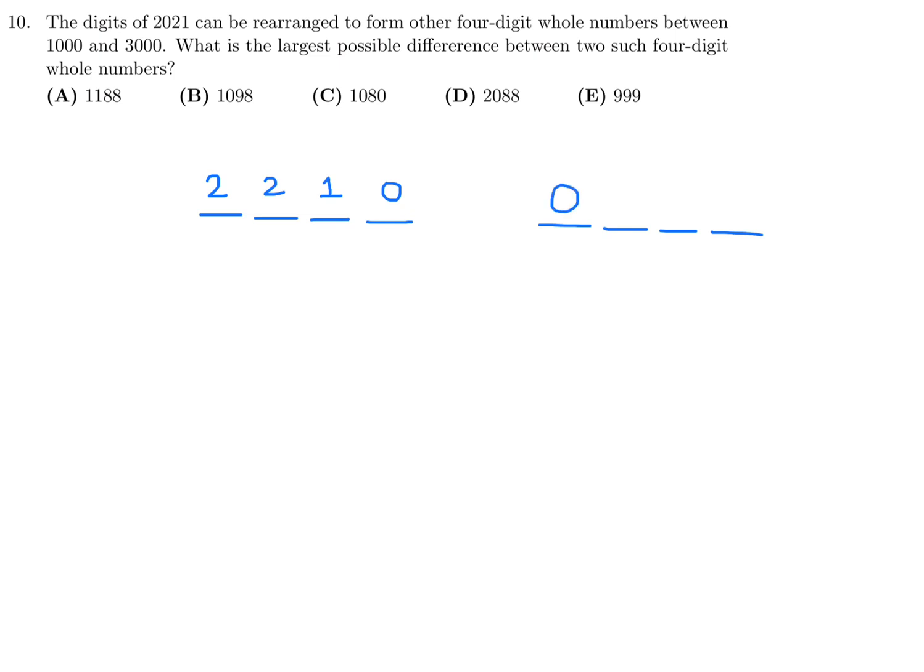For the smallest, the temptation is to put a 0 there. But then if you did, that wouldn't be a four-digit number. So the only number I can put here is either a 2 or a 1. But I want this to be the smallest possible, so I'm going to put a 1. Then I can put a 0 for the second digit. And then there's only 2 and 2 left, so by default, I have to put those. This gives 1022. Then I take the difference and get 1188. That is the difference between the largest and smallest numbers that can be made with the digits 2, 0, 2, 1. Number 10, the answer is A.